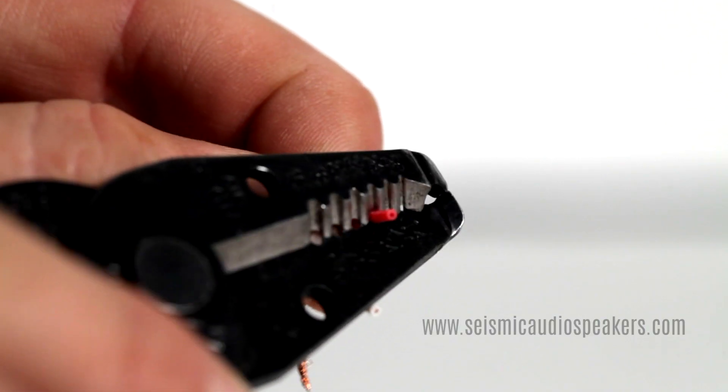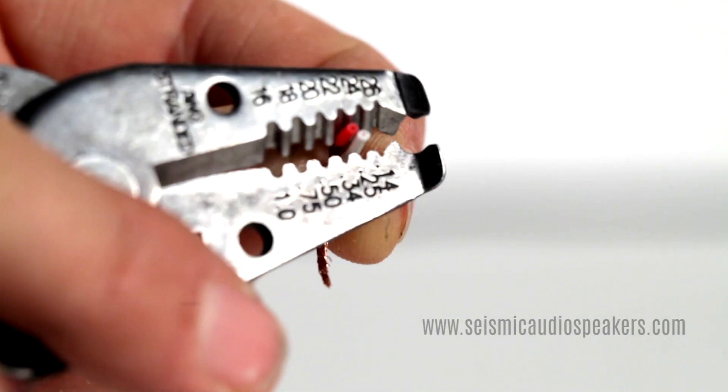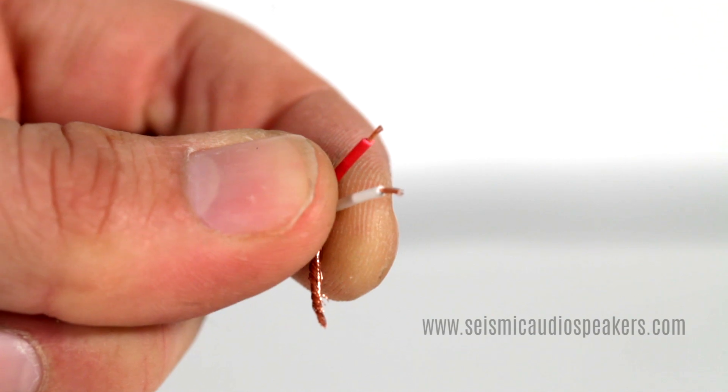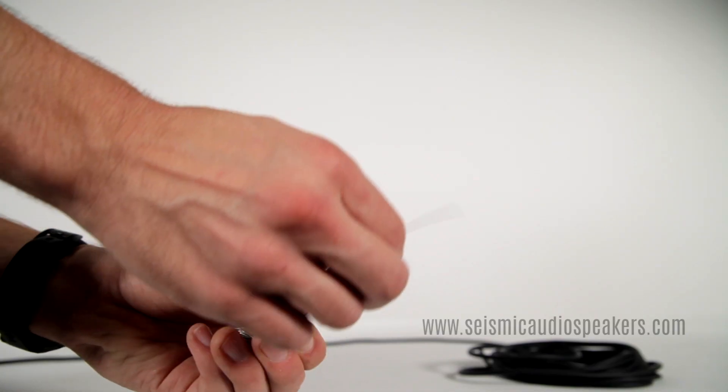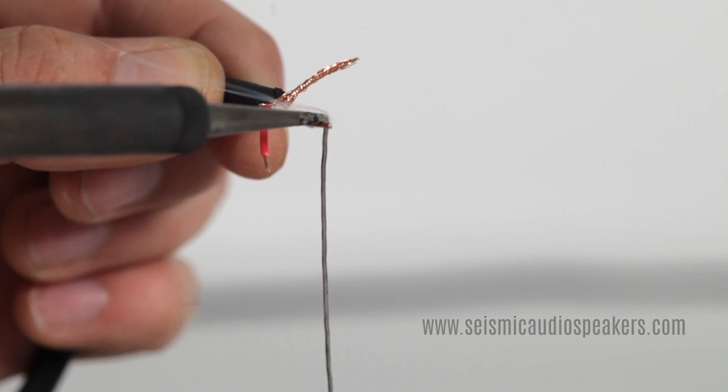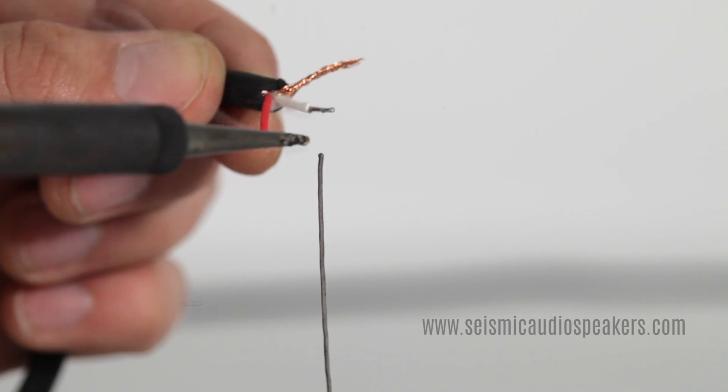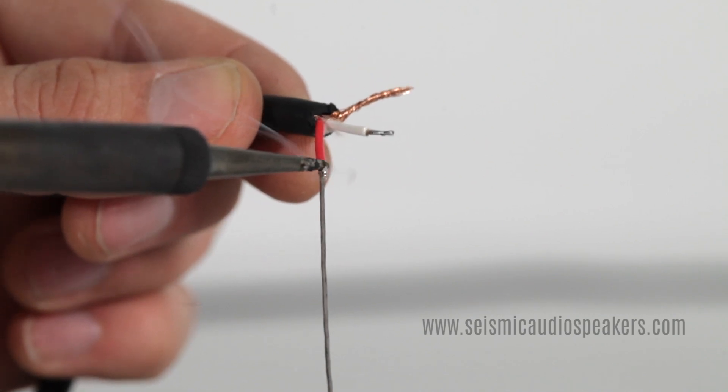Strip the red and white conductor wires back about three-sixteenths of an inch. Next, stretch a piece of solder so it stands up. Then touch the tip of the soldering iron to the end of the wire and touch the solder to the wire. The solder will flow onto the wire. This is called tinning.